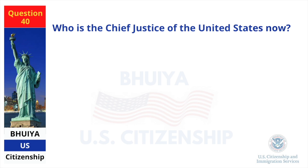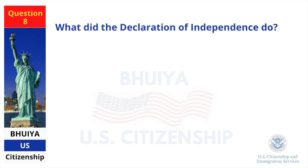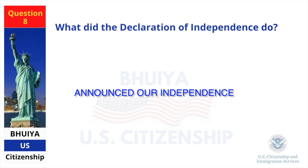Who is the Chief Justice of the United States now? John Roberts. What did the Declaration of Independence do? Announced our independence.